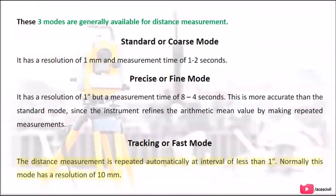In tracking mode, distance measurement is repeated automatically at intervals of less than 1 second. Normally this mode has a resolution of 10 mm.